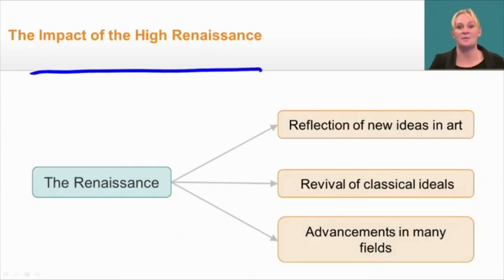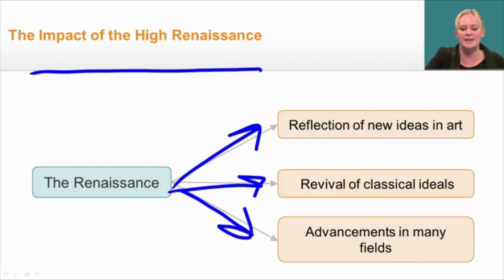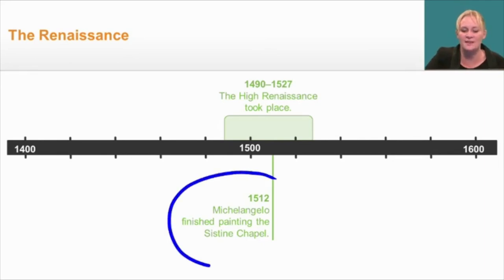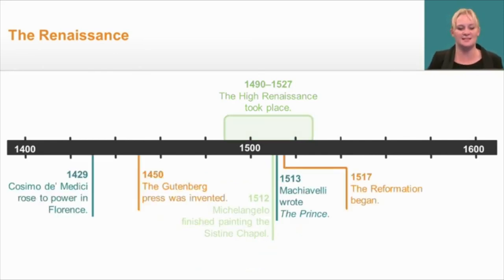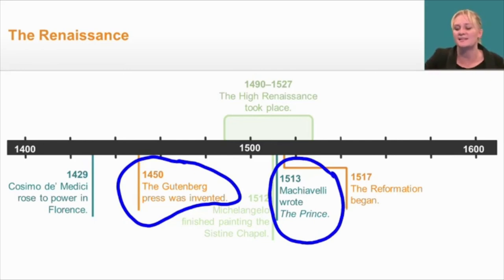The impact of the High Renaissance included a reflection of new ideas in art — naturalism and realism — a revival of classical ideas from ancient Rome and Greece around philosophy, beauty, and nature, and advancements in many fields. People wanted to become Renaissance men with expertise in multiple fields. In Italy, Renaissance painters created beautiful images, culminating when Michelangelo finished the Sistine Chapel in 1512. But this revival wasn't just in Italy — in 1450 the Gutenberg Press was invented, finally allowing literature to be delivered to the masses, Machiavelli wrote his famous book The Prince, and all of this culminated in 1517 when the Reformation began.